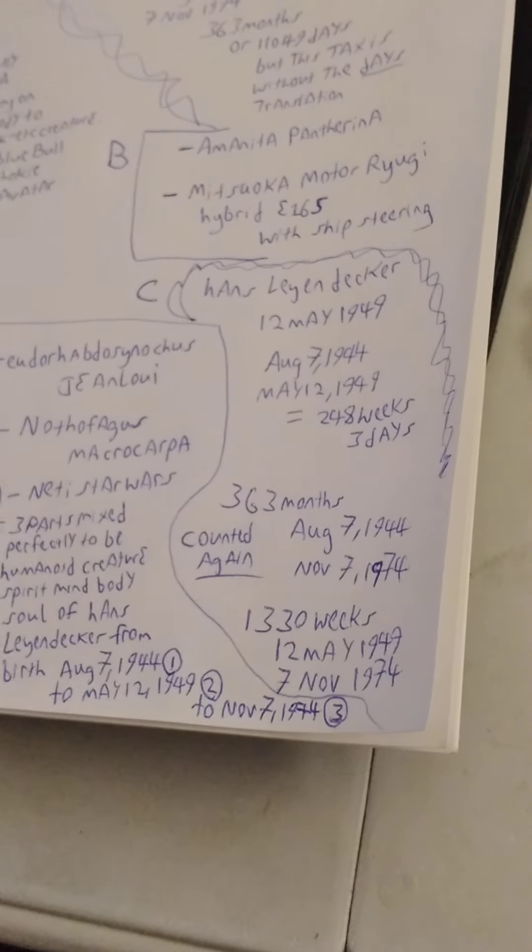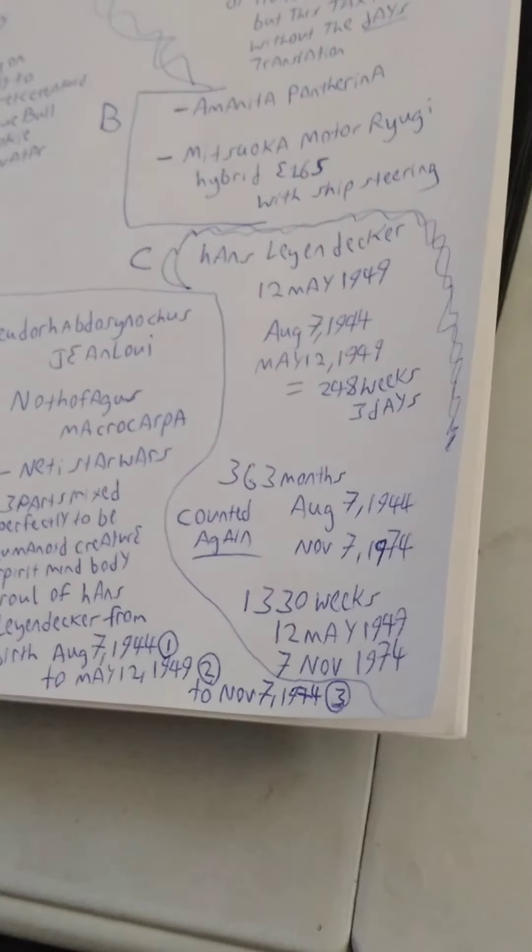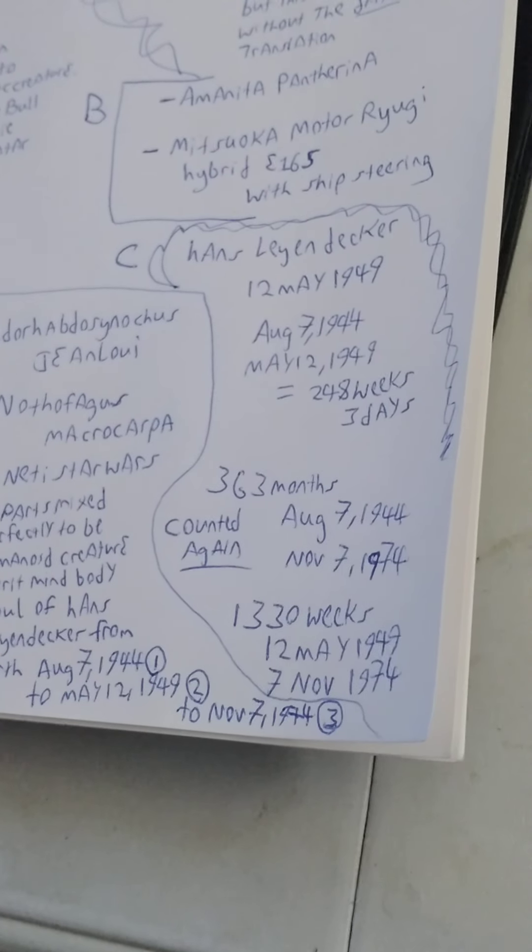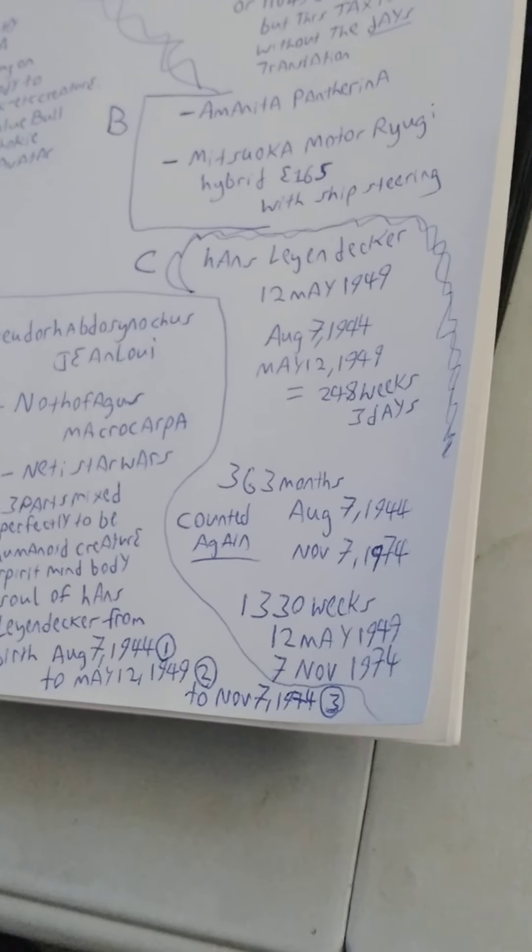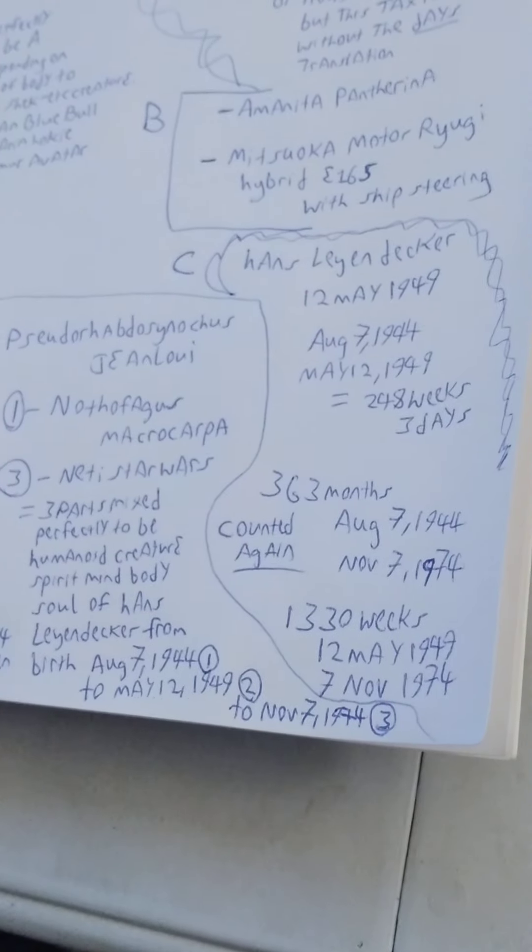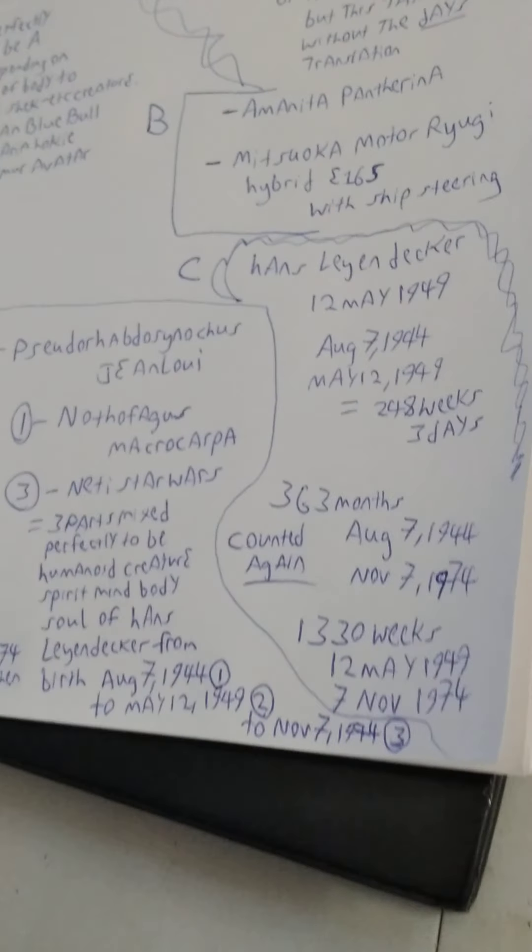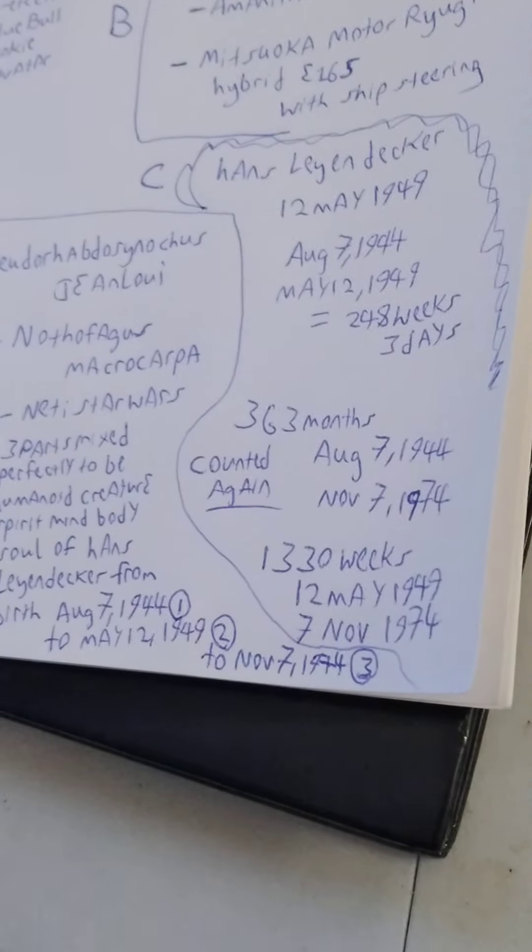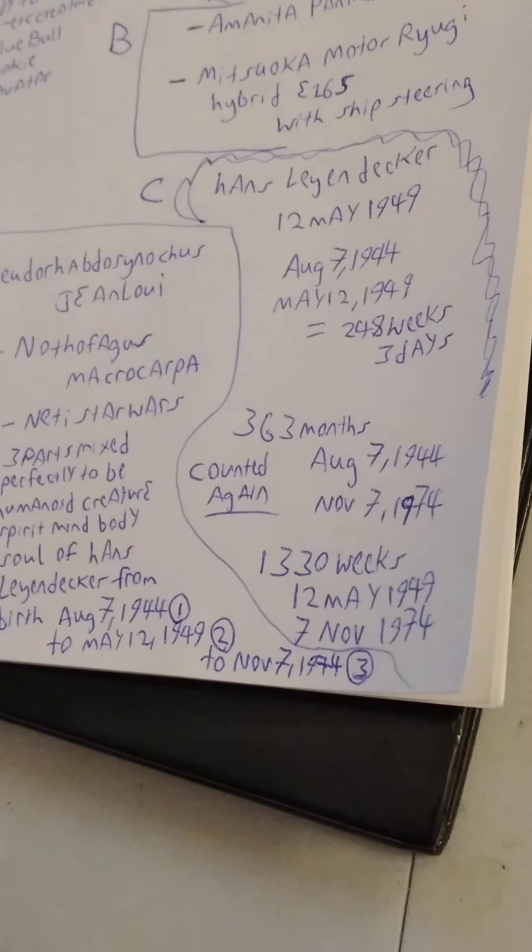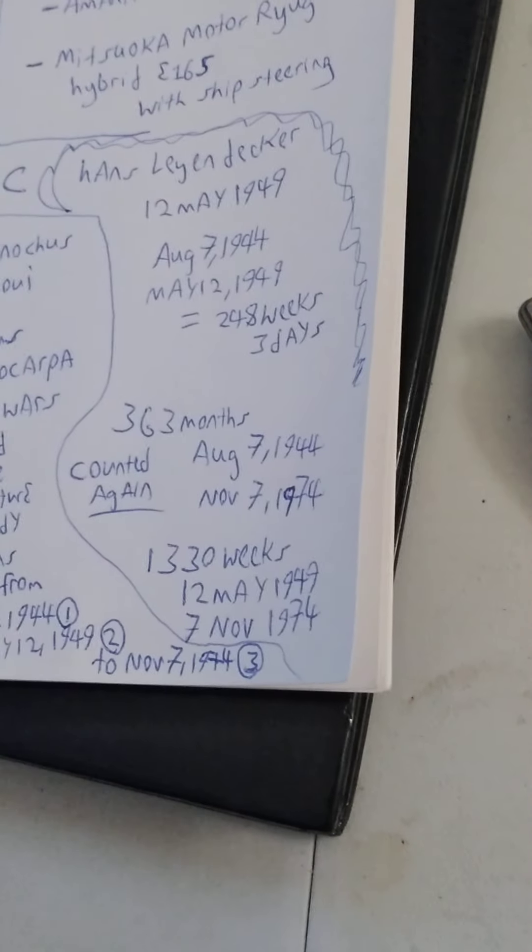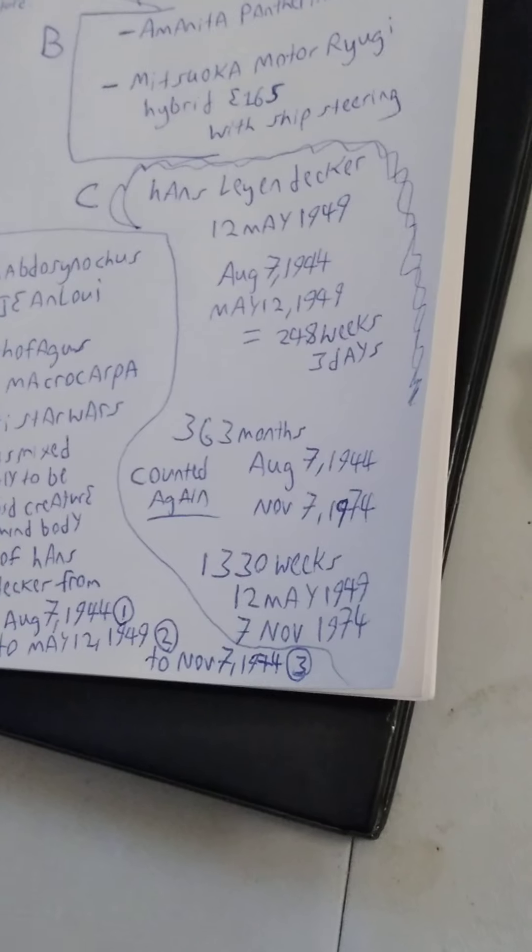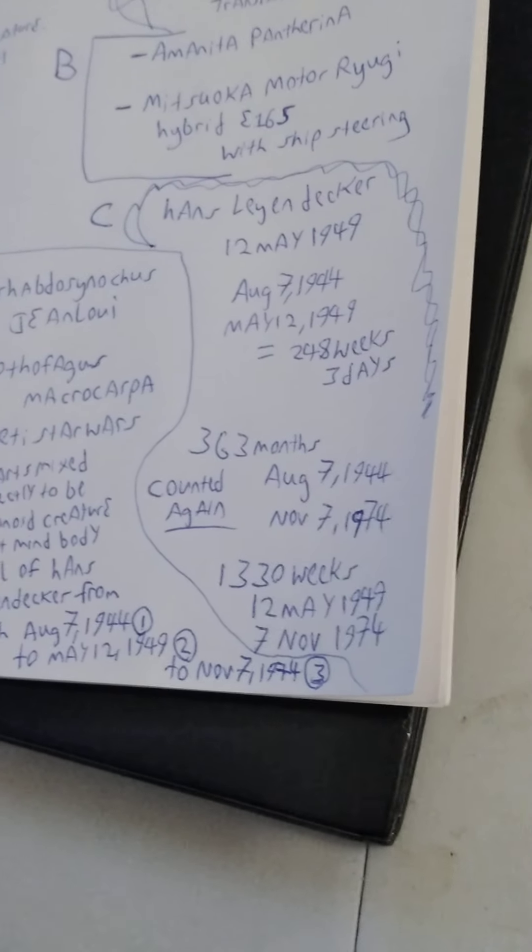And then 363 months August 7th, 1944 to November 7th, 1974 counted again. 1,330 weeks, 12 May 1949 to 7 November 1974.